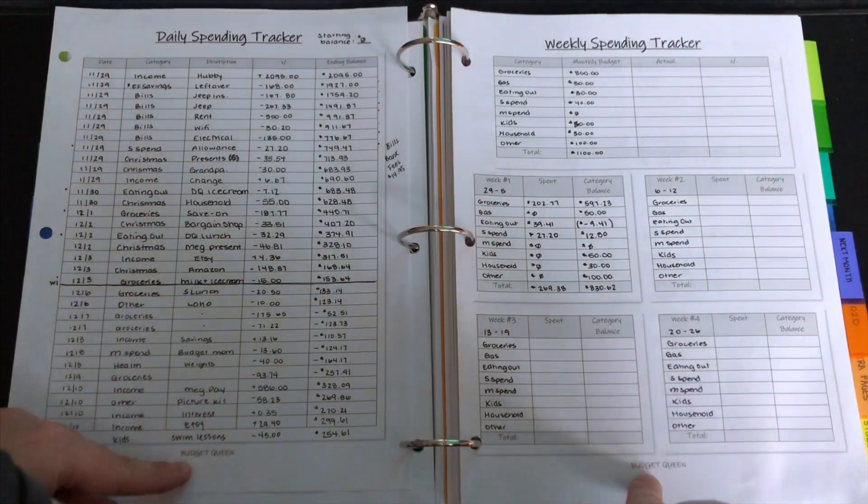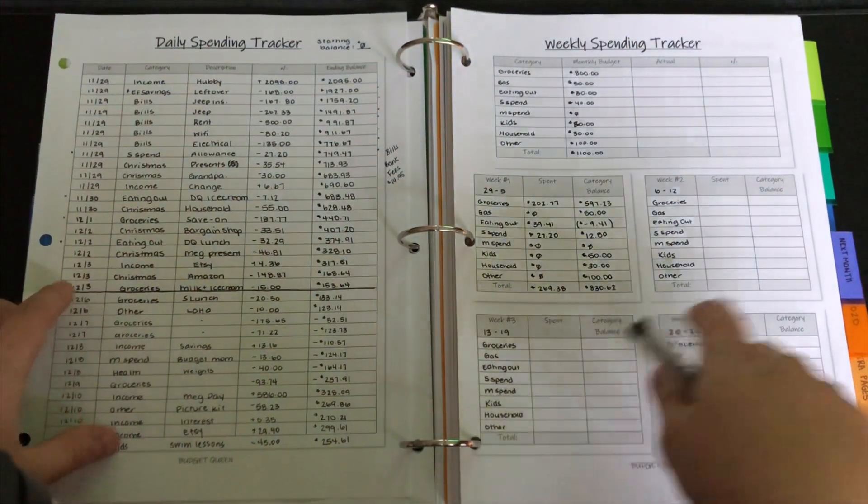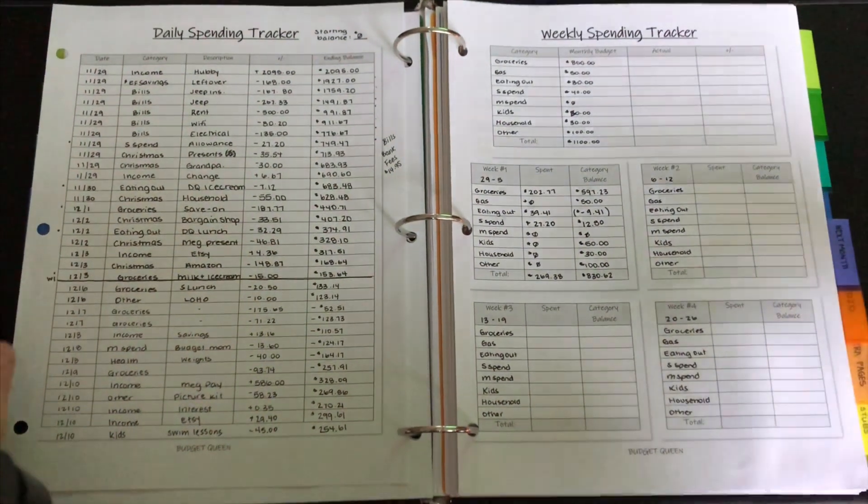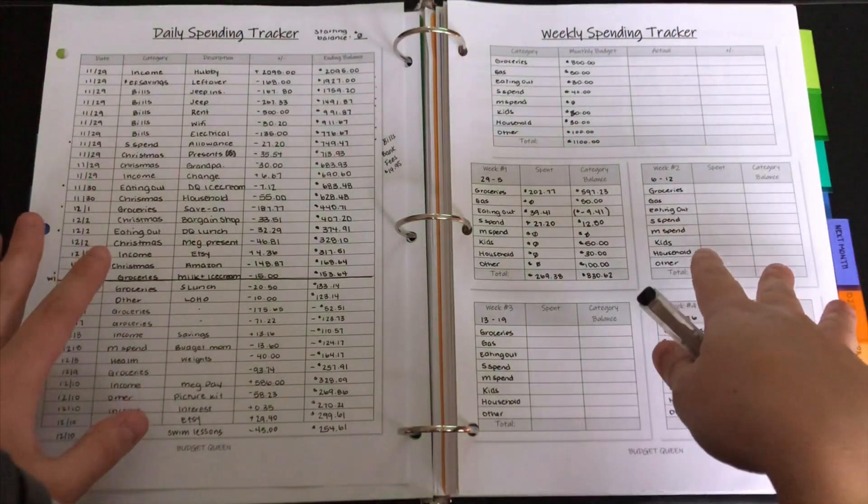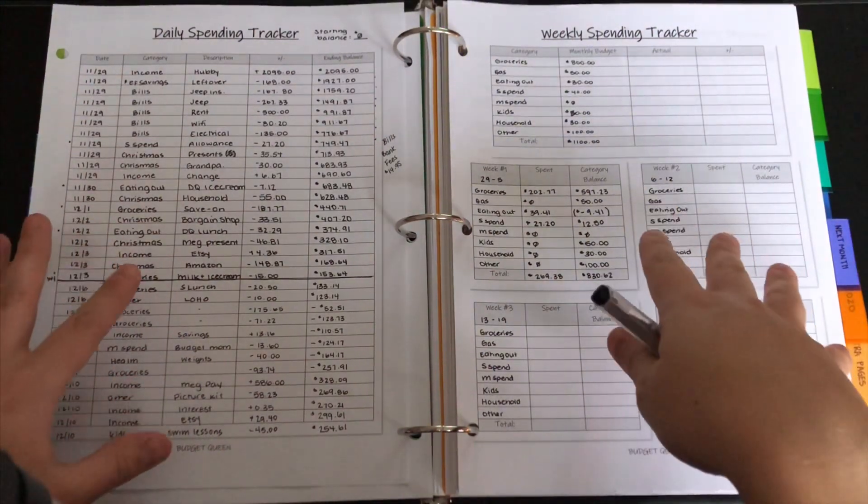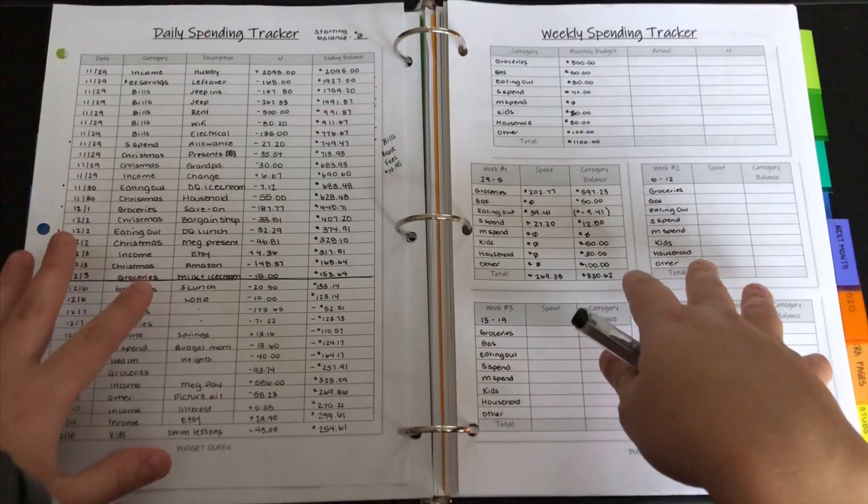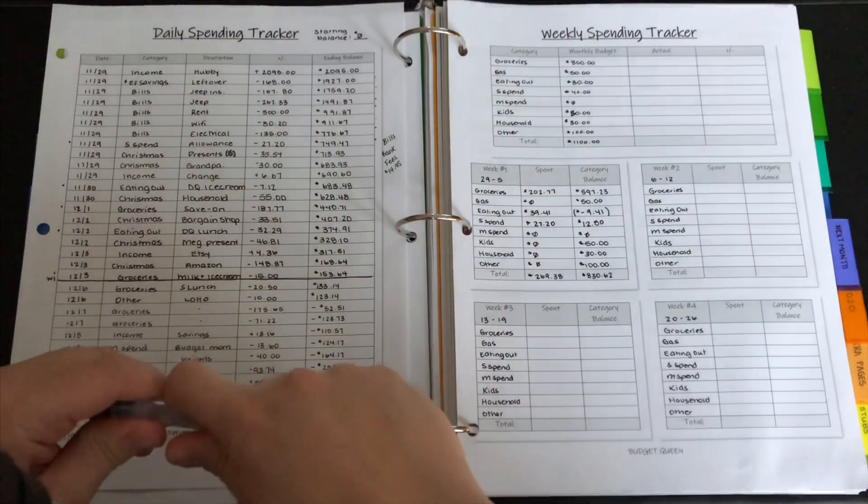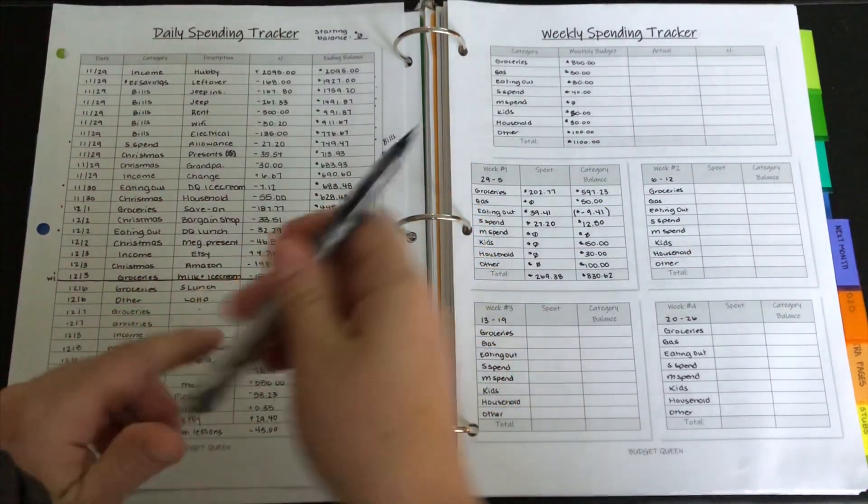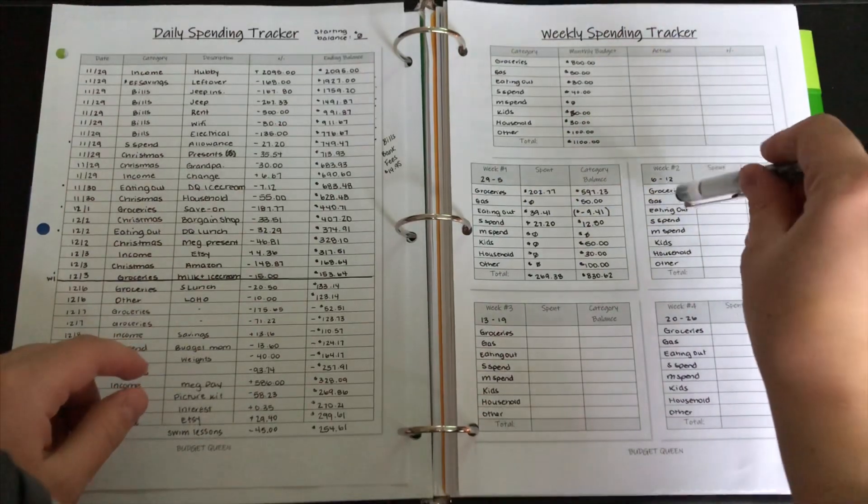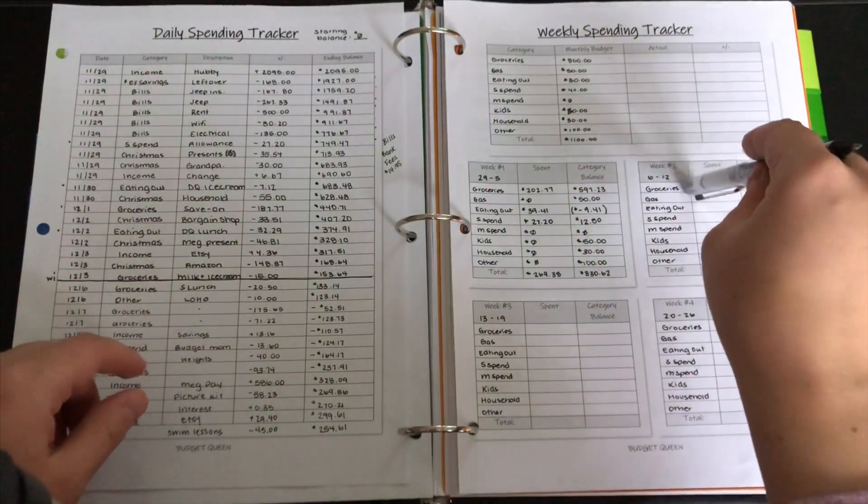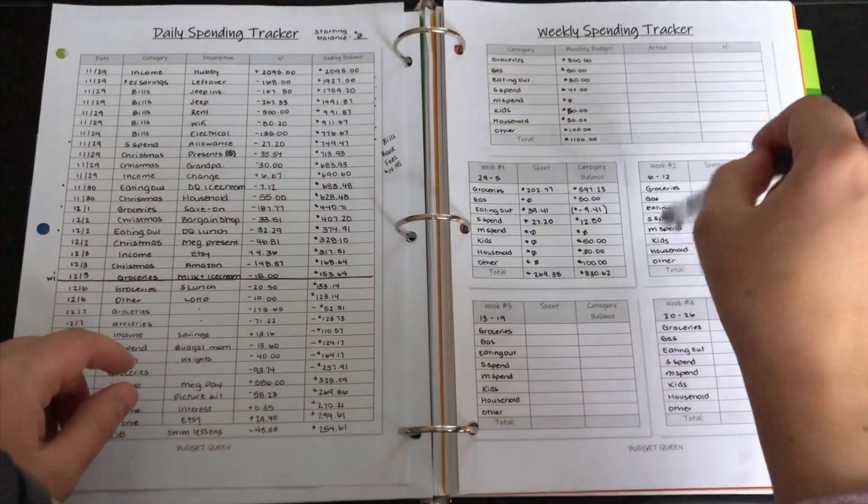Every page that says Budget Queen at the bottom are mine. So yeah, let's get into it. I've already done all the calculations for the numbers just so it goes a little bit faster in this video. But let's go along here starting with my first category which is groceries. These are all my expenses just so you know.